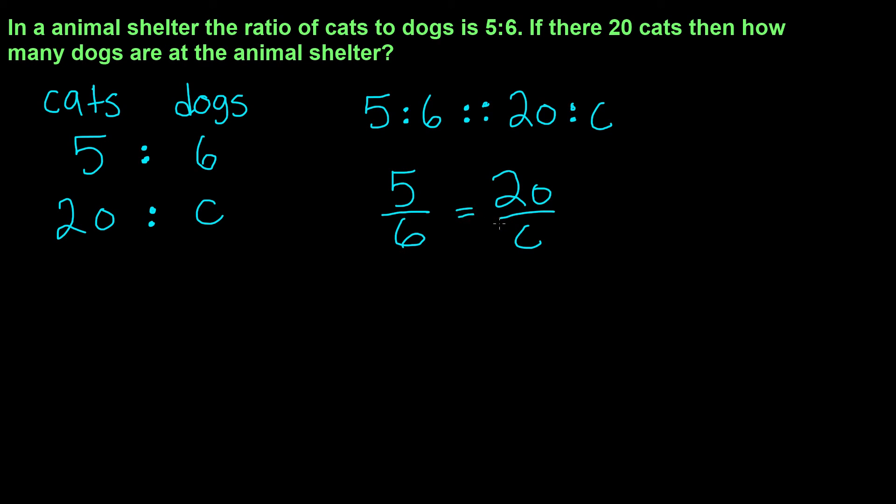These two are equivalent fractions. We're going to use cross-production. I'm going to multiply 5 by C and multiply 6 by 20. When I multiply 5 by C, I get 5C. When I multiply 6 by 20, I get 120.